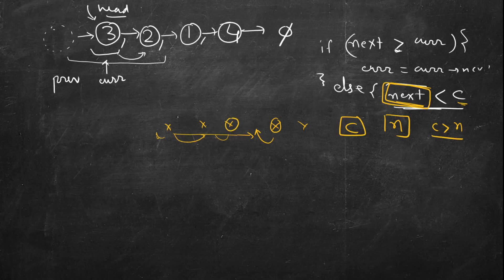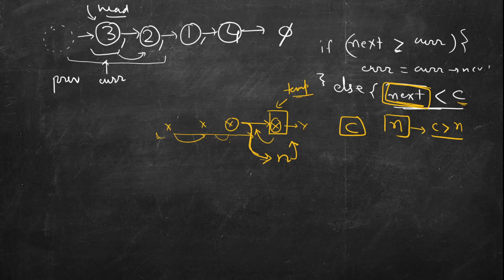To insert, we need to cache the element whose next pointer we're changing, because if we change that next pointer we lose track of the following node. We cache it into some temp node. Then three pointer exchanges are required: current's next should equal current's next's next, the inserted node's next should point to the old next, and the previous node's next should point to the inserted node.